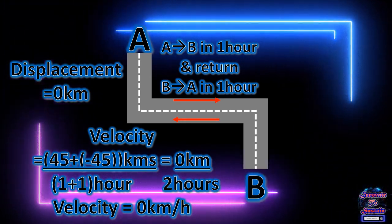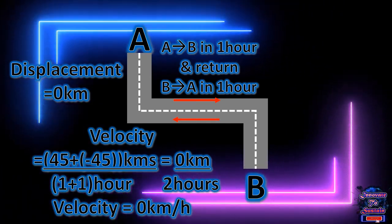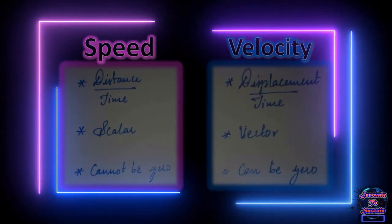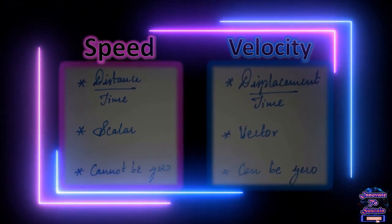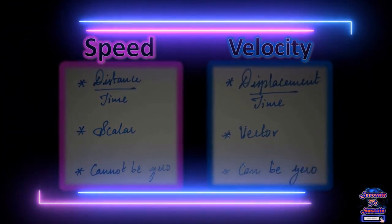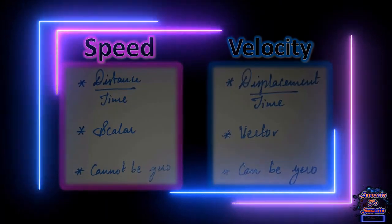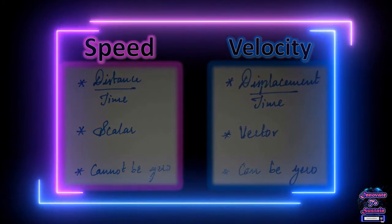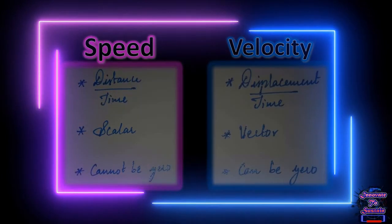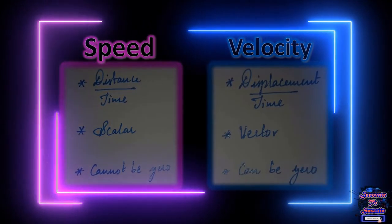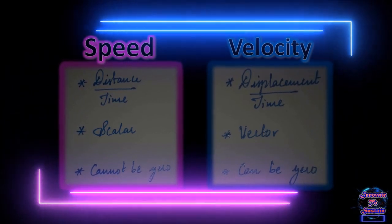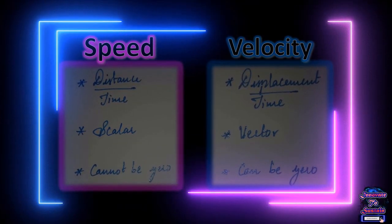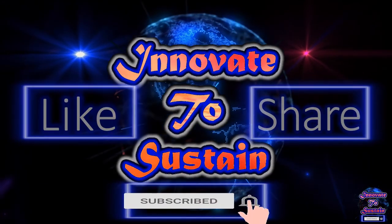Key differences between speed and velocity: Speed is distance covered divided by time taken; velocity is displacement made divided by time taken. Speed is a scalar quantity because it is based on distance; velocity is a vector quantity because it is based on displacement. Speed cannot be zero as only addition is allowed; velocity can be zero as displacement in the negative direction is subtracted.